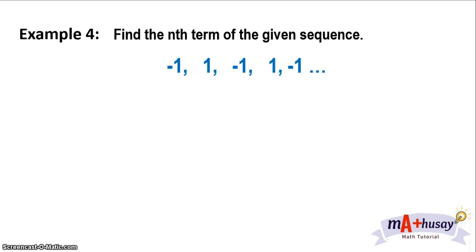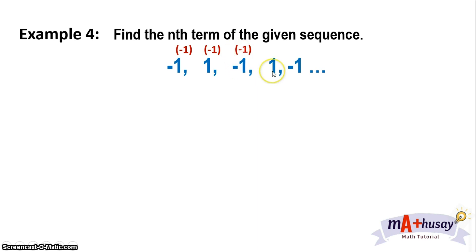Let's have the last example, number 4. We have the sequence negative 1, 1, negative 1, 1, and negative 1, and so on. This sequence is entirely different from the previous examples. We see that each term after the first is obtained by multiplying by negative 1. The first term is negative 1; multiply it by negative 1 and you get positive 1. From positive 1, multiply by negative 1 again, you get negative 1. Multiply negative 1 by negative 1 again, and you get positive 1, and so on.